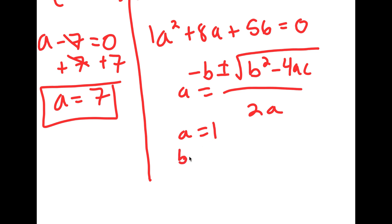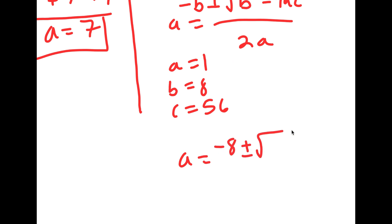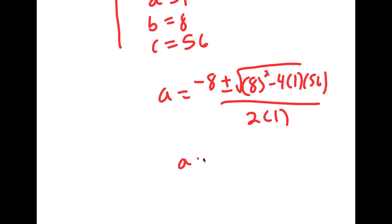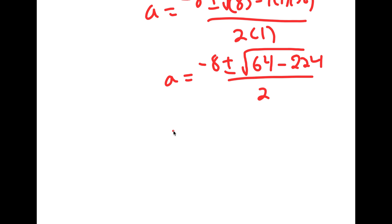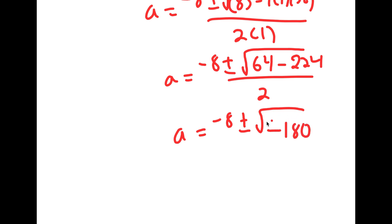In this case, a is 1, b is 8, and c is 56. So I get a is equal to negative 8 plus or minus the square root of 8 squared minus 4 times 1 times 56, all over 2. This equals negative 8 plus or minus the square root of 64 minus 224, which gives the square root of negative 160. And notice how we have the square root of a negative number, so this will not work.